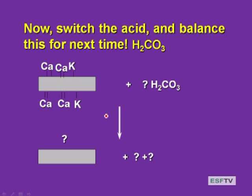Take-home question: switch the acid from HCl to carbonic acid. Take the same colloid with calcium and potassium, and determine how much carbonic acid is needed to make the reaction go, and what the balanced reaction looks like. I will ask for your answer next Monday. You should be able to do this because you're doing it in lab.